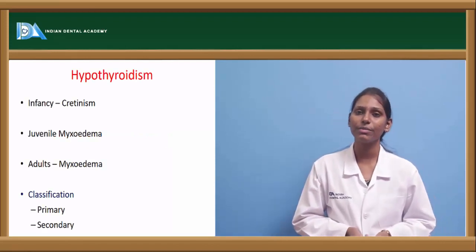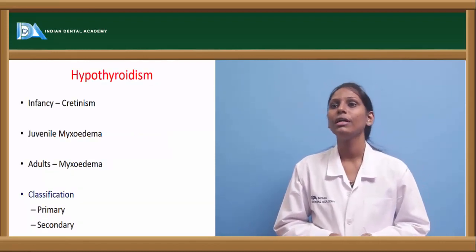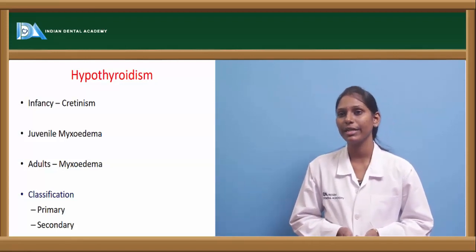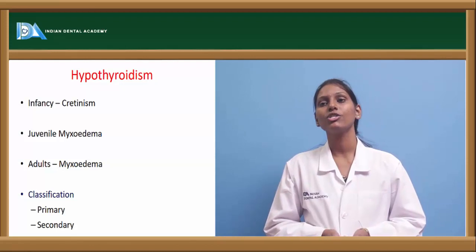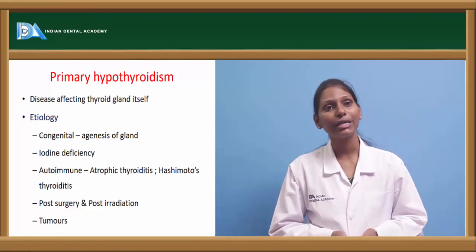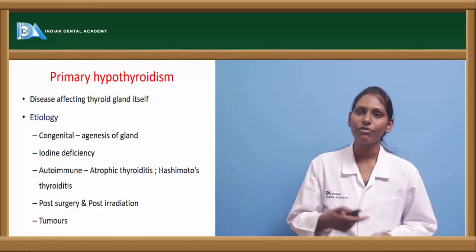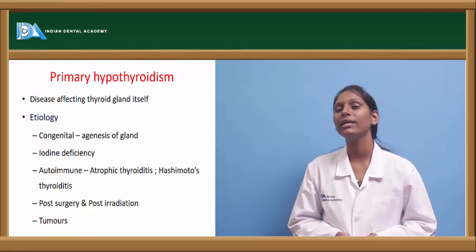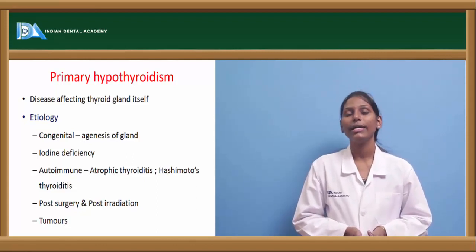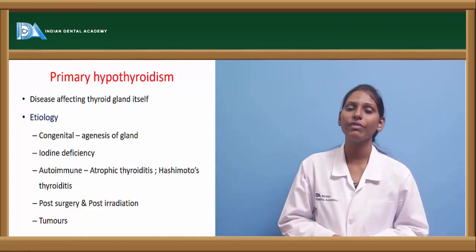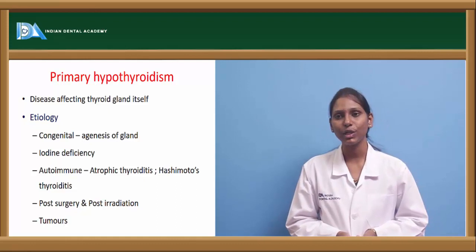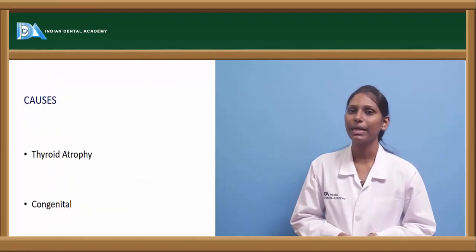Hypothyroidism is a decrease in circulating T3 and T4. It manifests differently by age: in infants it is called cretinism, there is also juvenile myxedema, and in adults it is called myxedema. Primary hypothyroidism is disease affecting the thyroid gland itself and can be caused by congenital agenesis of the gland, autoimmune conditions such as atrophic thyroiditis or Hashimoto's thyroiditis, iodine deficiency, post-surgical or post-irradiation changes, or tumors of the thyroid.